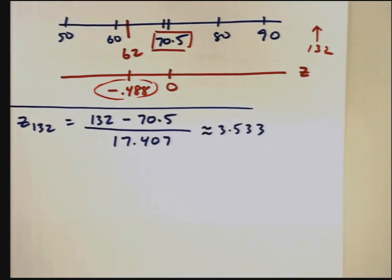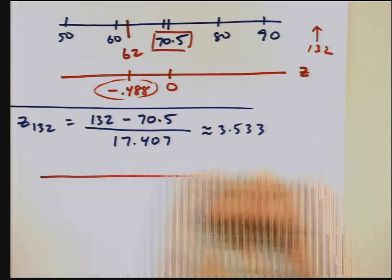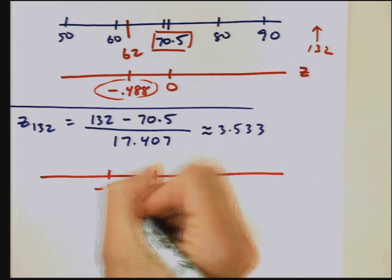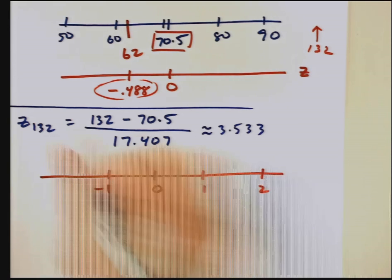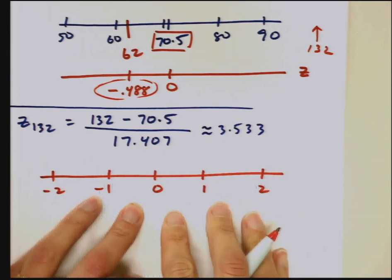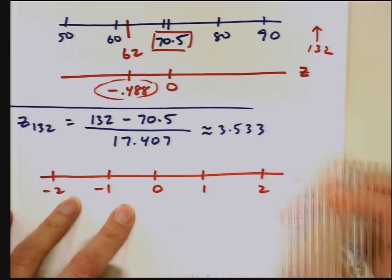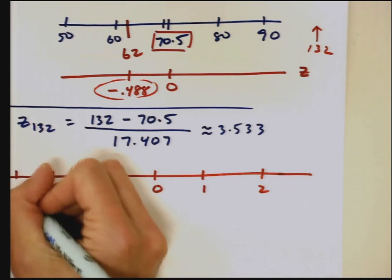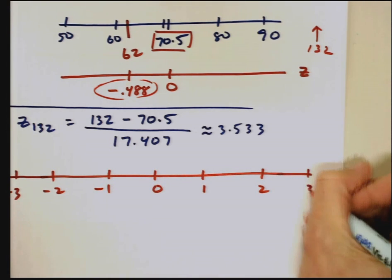On my z-score scale, let me redraw it. Zero, one standard deviation, negative one. Two standard deviations, negative two. This is where I expect most of my data to live, somewhere upwards of like 97%. Negative three and three.